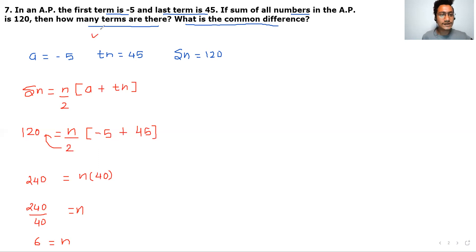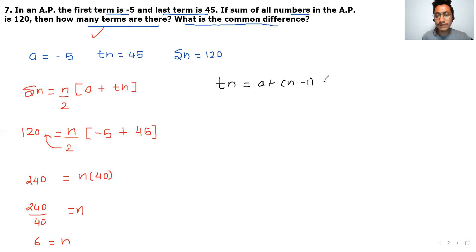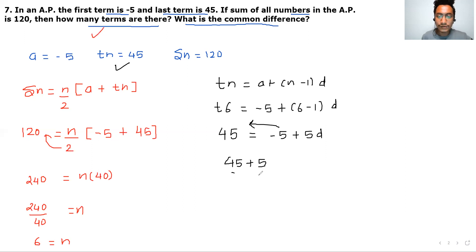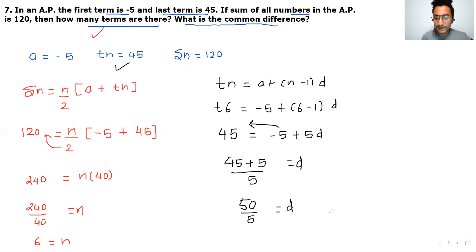So 240 divided by 40 equals n, therefore n equals 6 — there are 6 terms. Now to find the common difference, apply the TN formula: T6 equals A plus 6 minus 1 times D. So 45 equals minus 5 plus 5D, giving 45 plus 5 equals 50 equals 5D, therefore D equals 10. The common difference is 10.